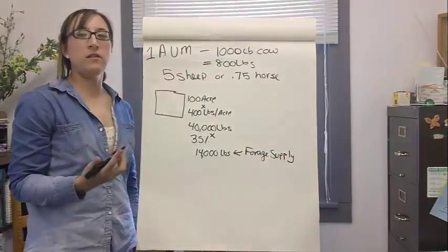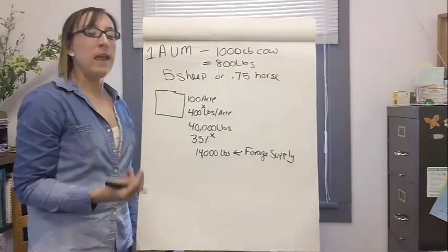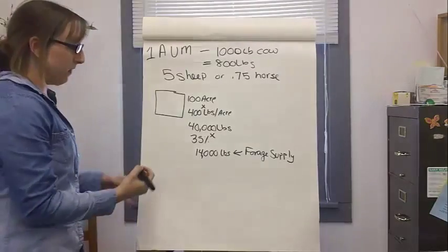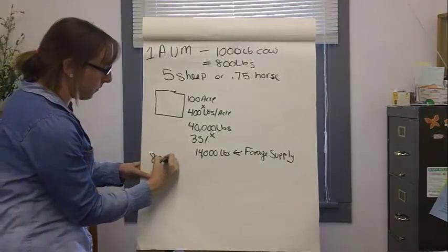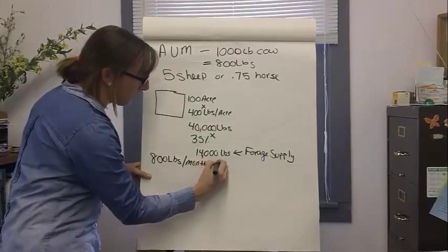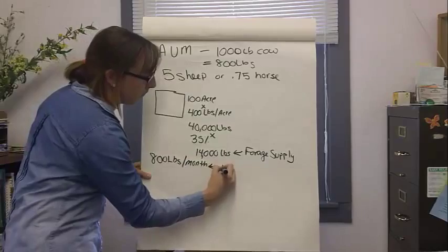Now we need to figure out our forage demand. In this example, we'll be using a 1,000 pound cow. Remember, a 1,000 pound cow can eat 800 pounds of forage per month. This is our forage demand.